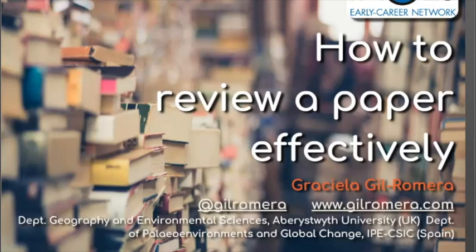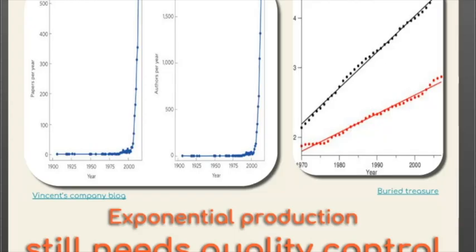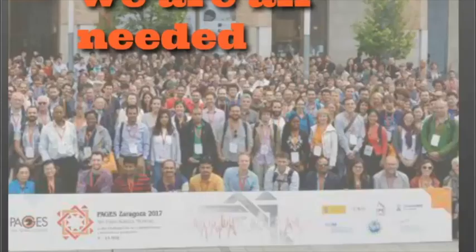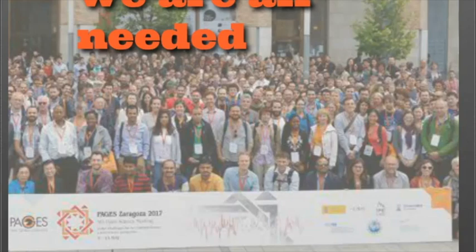Peer review is at the core of scientific quality. We're witnessing an exponential increase in the number of papers and publications per year, but this still needs quality control. Peer review is probably the best method we have so far. Because we have so many papers being produced, we are all really needed. All of us will eventually be asked to review a paper — probably as soon as your first paper is published, you'll be identified as an expert and invited to review.